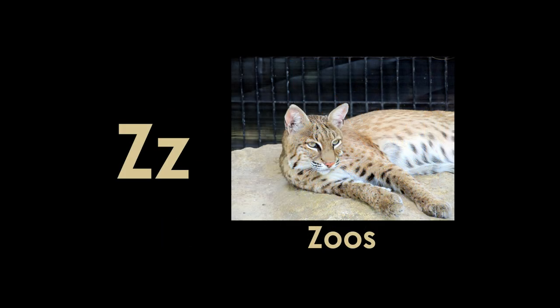Z is for zoos. Kansas has many zoos where we can learn about animals. They're home to animals who live in the wild in Kansas, like this bobcat, and also to animals like elephants, giraffes, and penguins that live in the wild far away. Zoos also help preserve animals who are threatened by extinction. When there were very few bison left in the wild, some of them were placed in zoos where they were cared for until it was safe to turn them loose in the wild again.